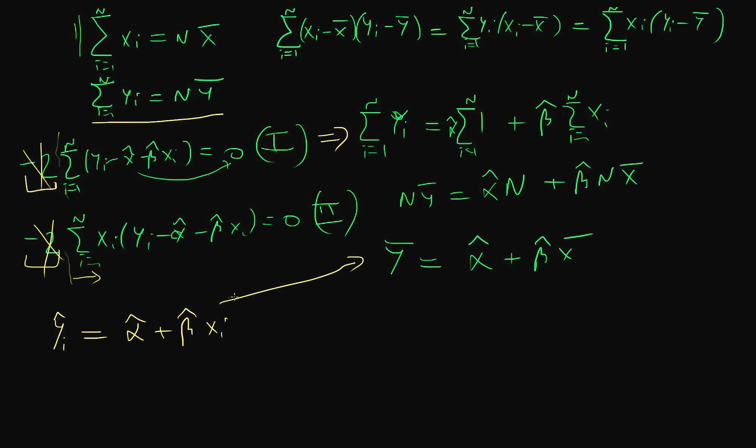This looks pretty similar to this relationship, except instead of y hat i and xi, I have y bar and x bar respectively. Well, what does that tell us?